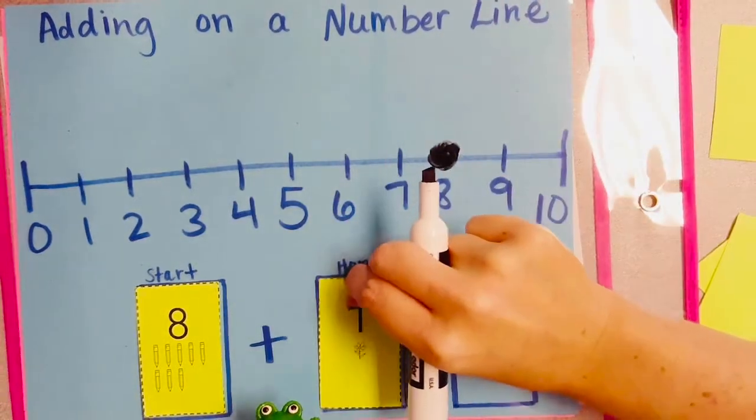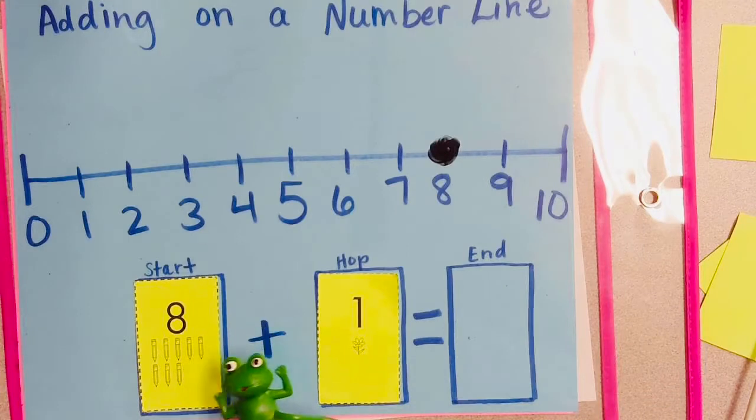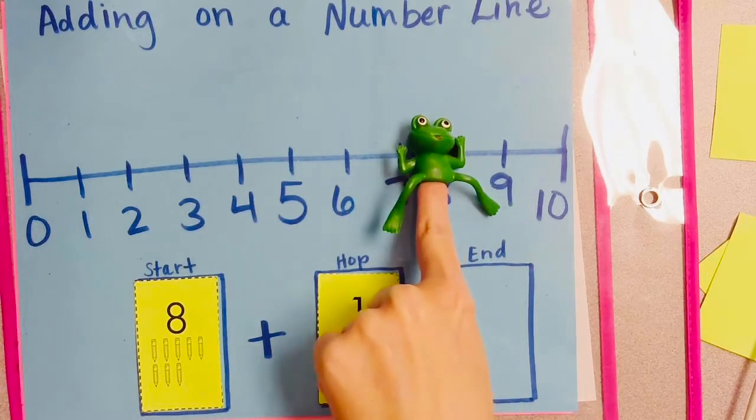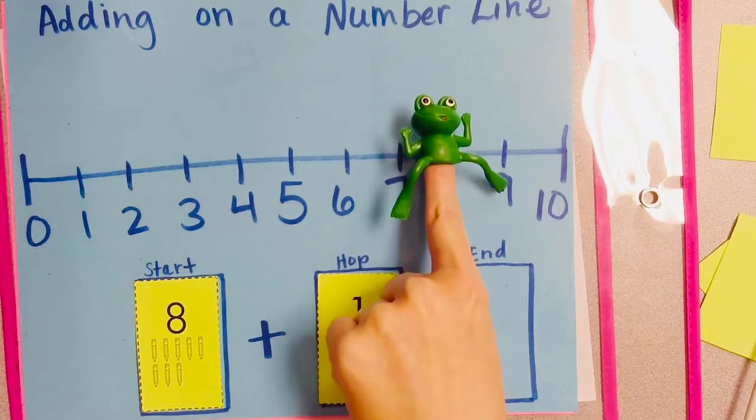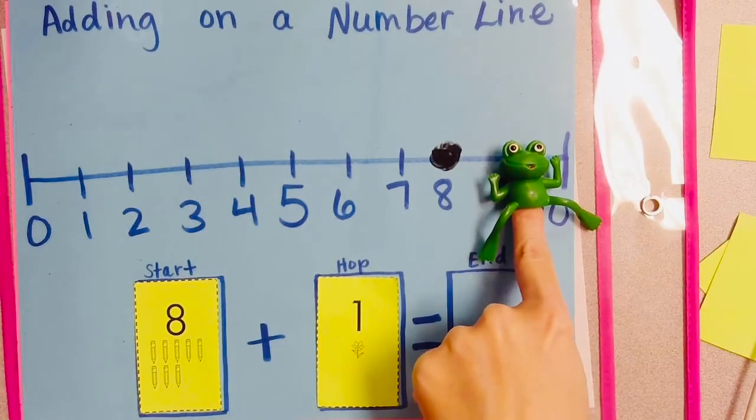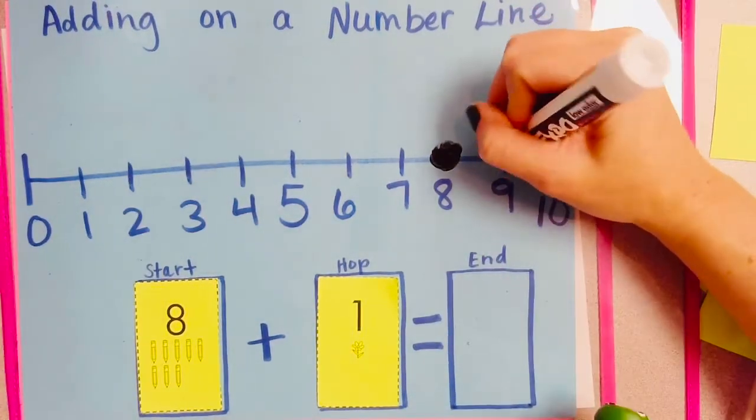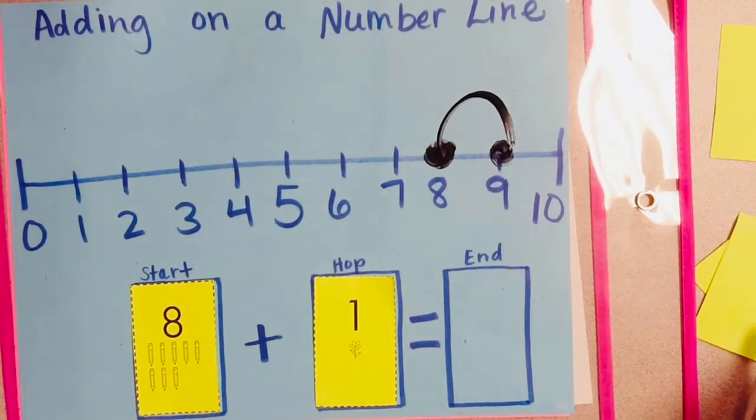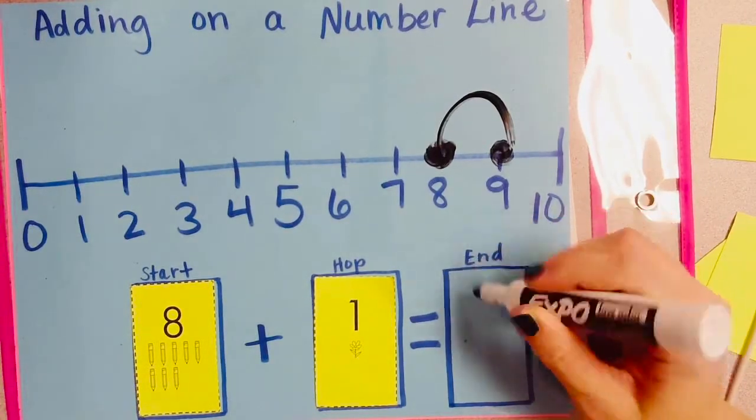And let's hop 1. I know I'm going to hop forward because that's where the numbers get greater. You ready? Frog's ready. This is going to be an easy jump. 1. Whenever we add 1, it's just the number that comes next. 9. 8 plus 1 is 9.